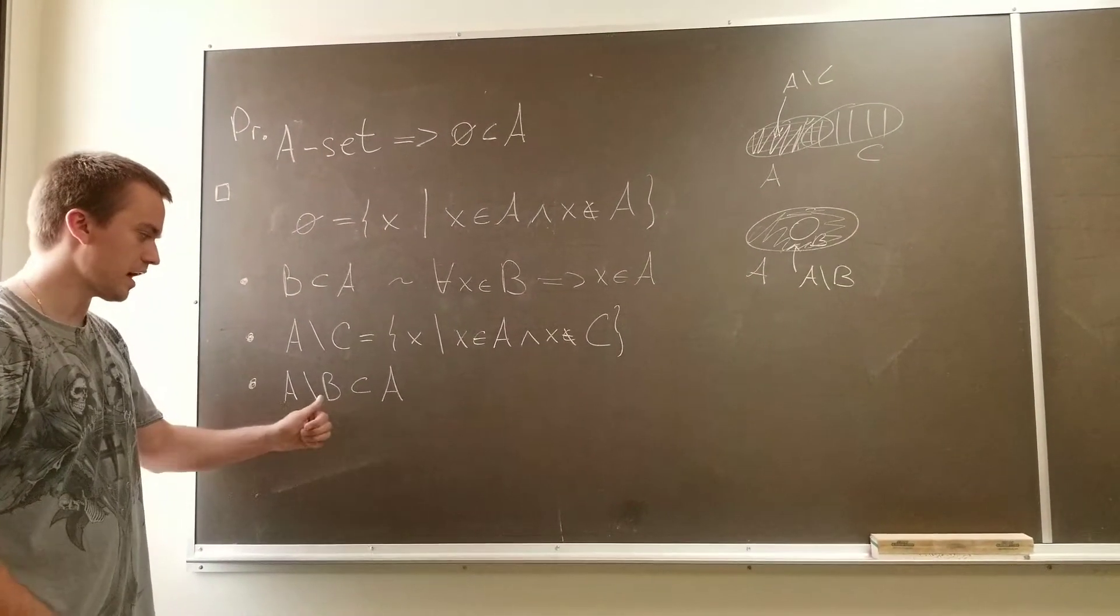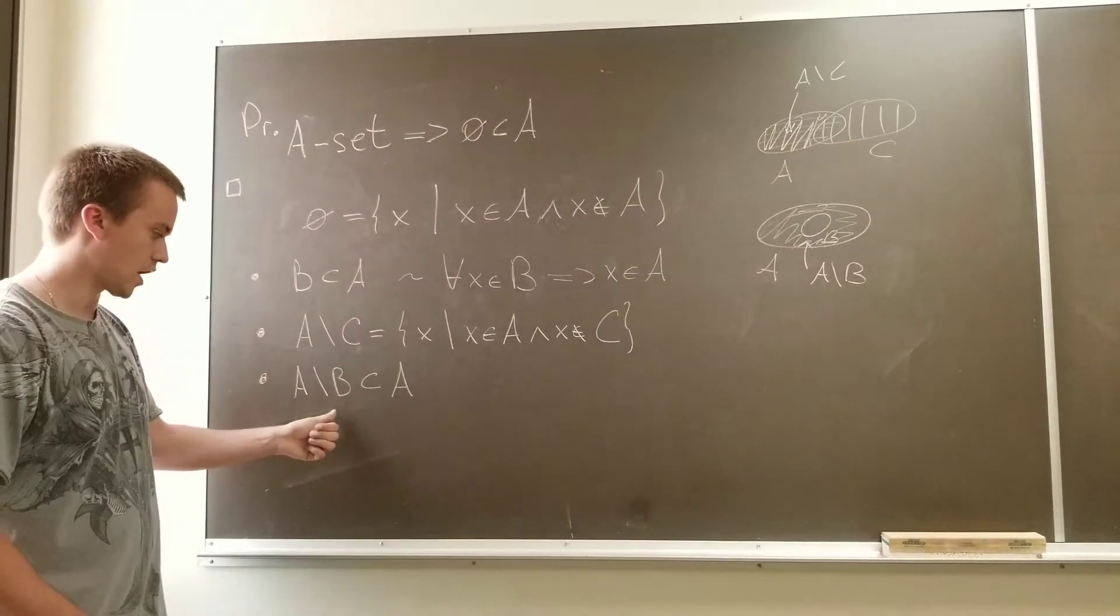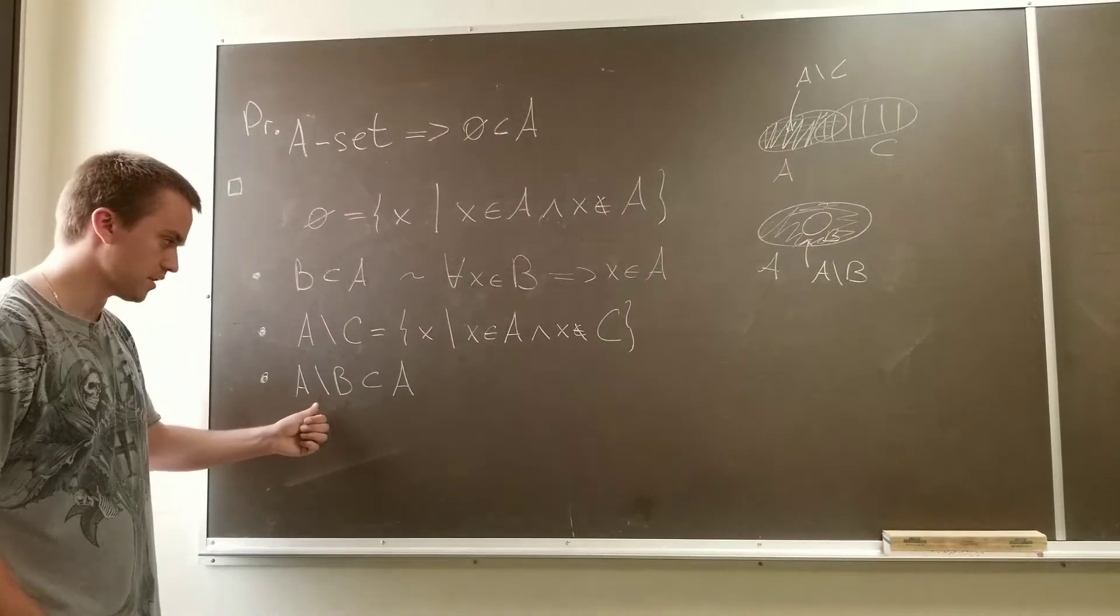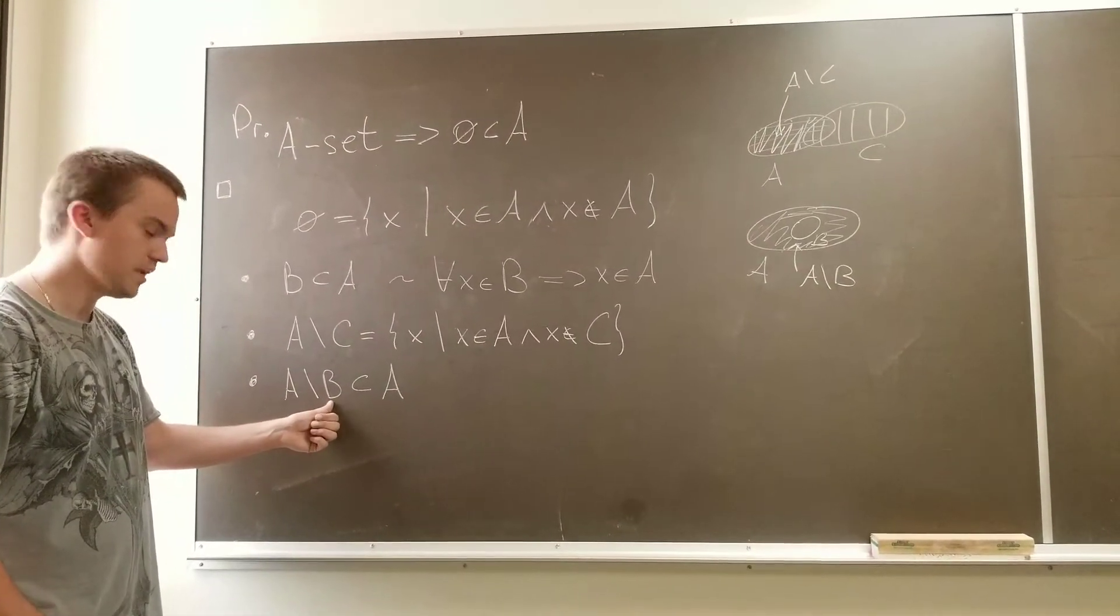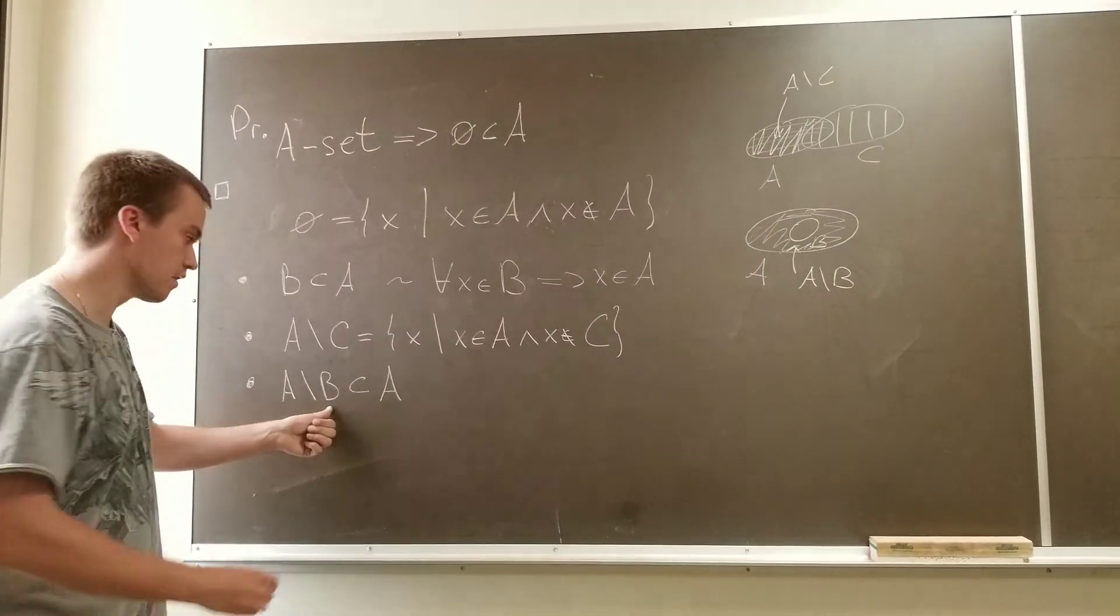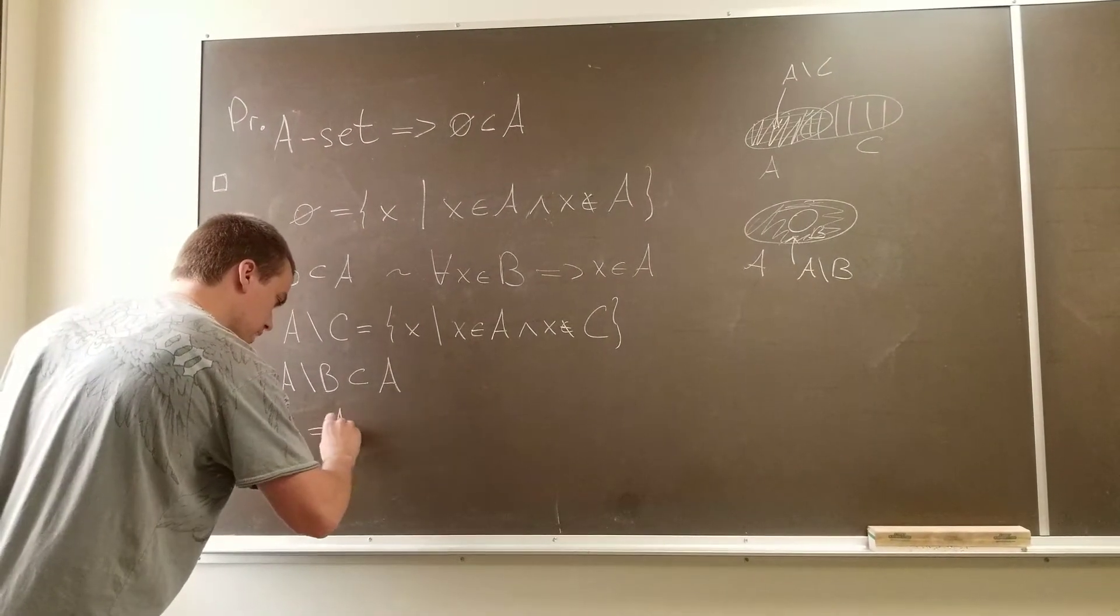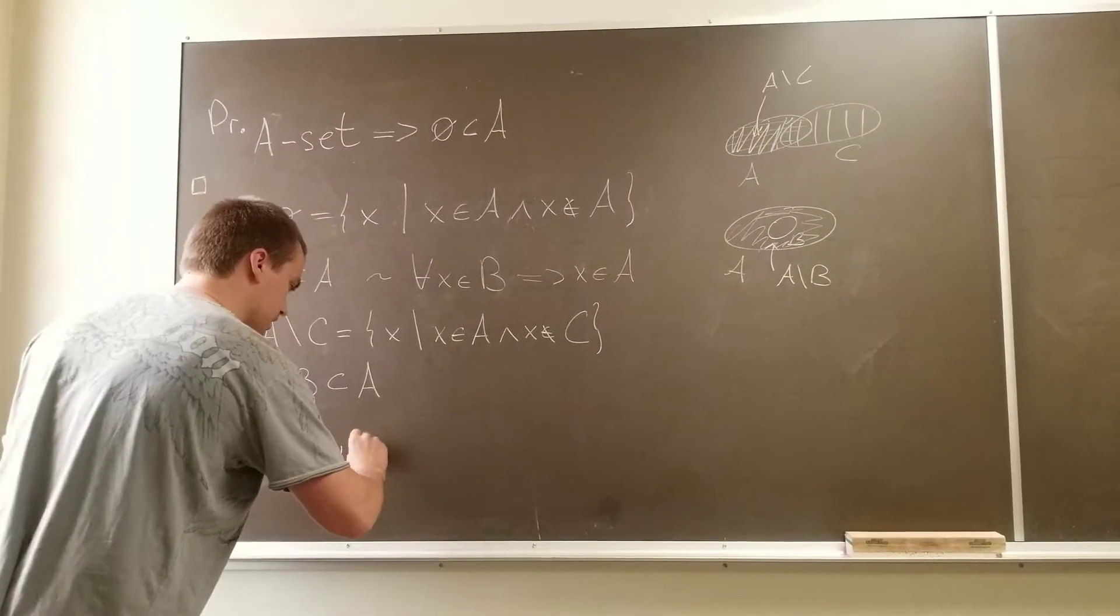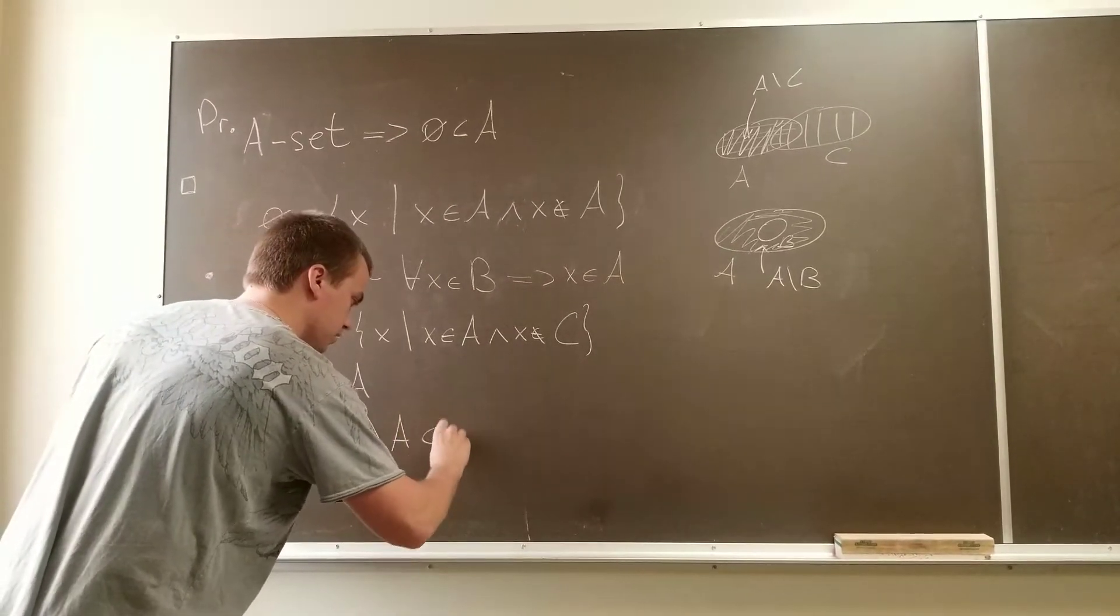So if I take any subset B of A and subtract from A, I will get a subset of A. But let's take B to be A. When I take B equals to A, I will get that A minus A is a subset of A.